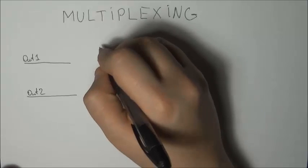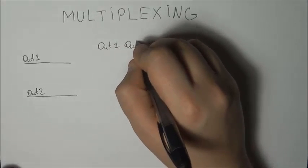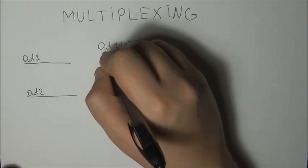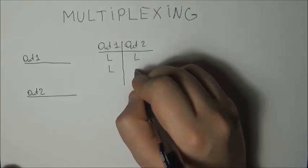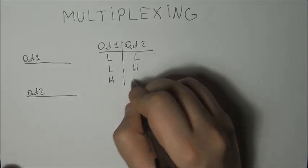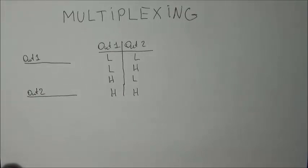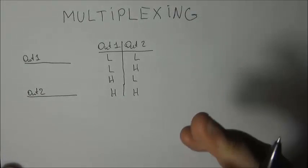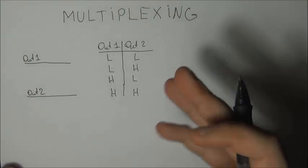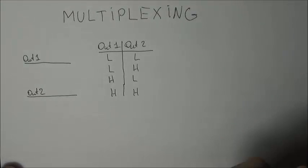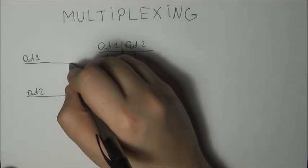Let's create the following truth table. So output 1, output 2. You can either set both of them to low, you can set one to high, you can set the other one to high, or you can set both of them to high. What does that tell you? That tells you that in essence you would be able to have four different states with two pins.